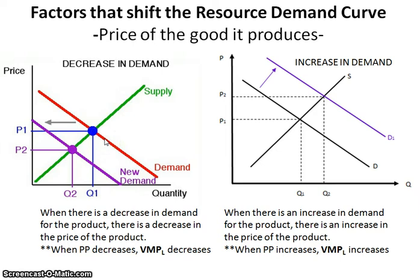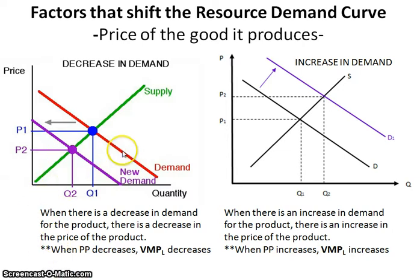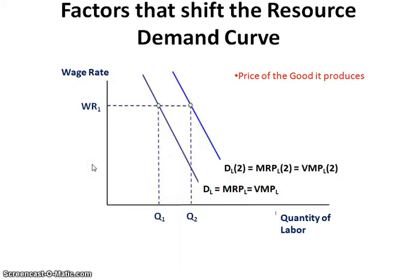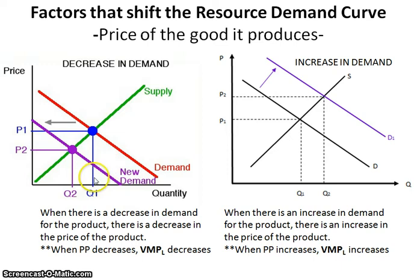If the demand for a good being produced decreases — because this is the product market — then the price of the product is going to go down. Price is used to look at the demand curve, and if I'm not going to make as many shoes, then I don't need as many shoemakers, so the demand for the resource will go down. When there's a decrease in the demand for the product, there's a decrease in the price of the product, and when the price of the product goes down, the value of the marginal product — or the demand for labor — will also go down.